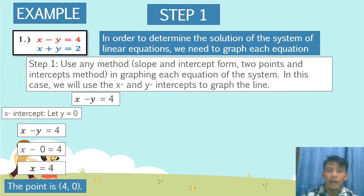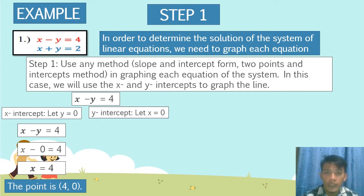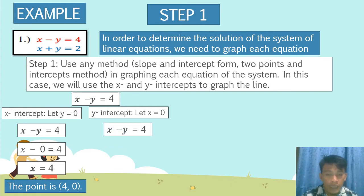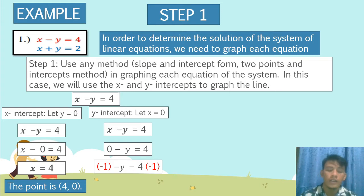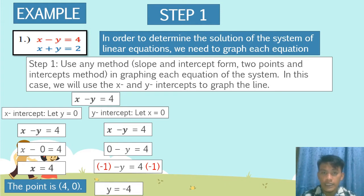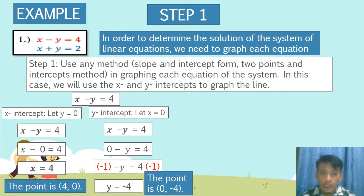To get the y-intercept, we let x equal to 0. Substituting into x minus y equals 4: 0 minus y is equal to 4, so negative y is equal to 4. We multiply both sides by negative 1 so that y will turn positive. Therefore, y is equal to negative 4. The point is (0, negative 4).